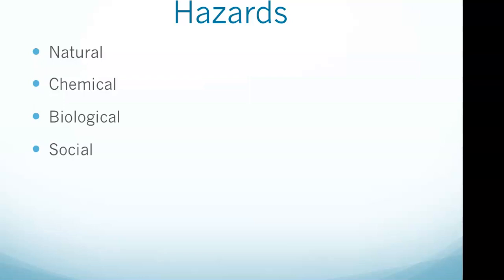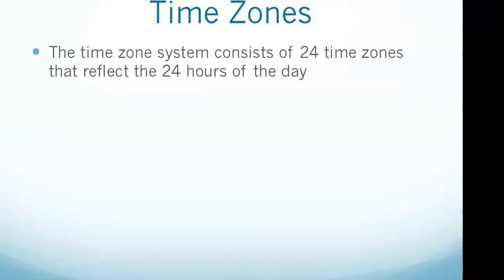As we move to time zones, this is a very straightforward question: how many time zones are there? The way they come up with this is that a complete rotation of the earth, which is 360 degrees of longitude, takes 24 hours. The time zone system consists of 24 time zones that reflect the 24 hours of the day.